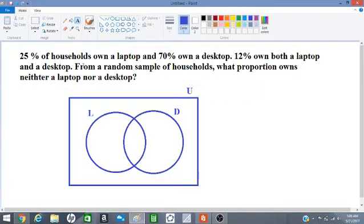So 25% of households own a laptop, so this circle should contain 25%. And 12% own both a laptop and a desktop. So that is this region here. This is the 12% region that owns both laptop and desktop.